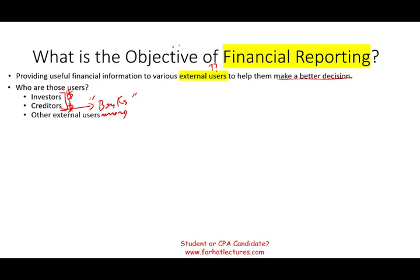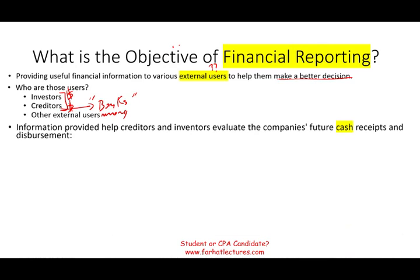The reason investors and creditors are the main focus is simple — they risk their capital, they risk their money. Therefore, we need to provide them as much information as possible so they can make a proper decision: whether to invest in our company or not, whether to increase or reduce their investment. Creditors want to know how risky your company is; based on that risk, they may or may not lend you money, and they will determine your interest rate. The information is provided to help those two groups evaluate the company's performance in terms of cash receipts and disbursements.